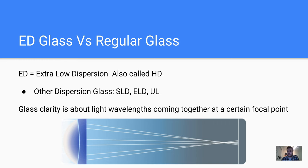There are a couple of other terms that aren't the same as ED glass but deal with the same sort of thing: SLD, which is Special Load Dispersion; ELD, which is Extraordinary Load Dispersion; and ULD, which is Ultra Load Dispersion. We're not going to worry about those — we're just going to focus on ED glass and why it matters, especially in rifle scopes, spotting scopes, binoculars, and all that good stuff.